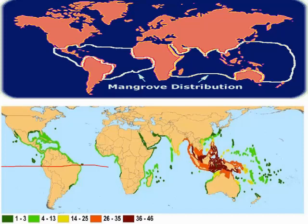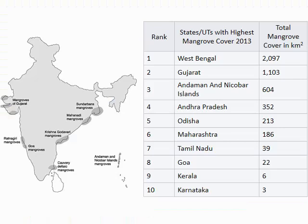Looking at the world distribution of mangrove, all mangroves are dominated in the tropical region near the zero degree line, where sunlight falls most directly. Most mangrove is concentrated in the tropical zone, and the largest patch is found in the region between the Pacific and Indian Oceans, around the Australian continent. The Sundarbans is the world's largest mangrove on the planet, shared between India and Bangladesh.